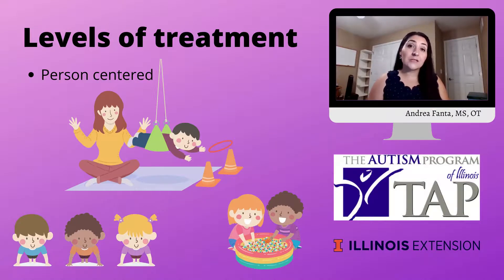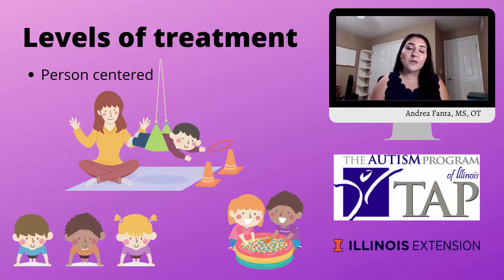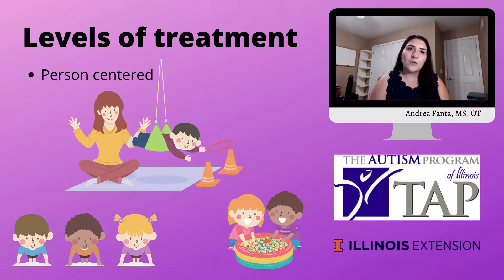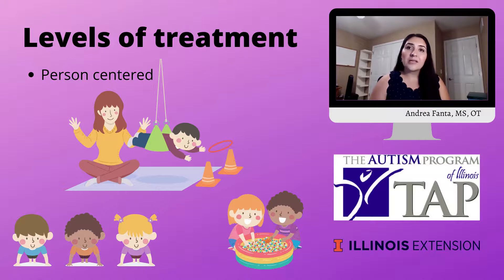Understanding and addressing SPD is important and we can do it in three different levels. Usually when the approach involves all three at the same time is when we see better results, having a child who is more comfortable with the sensory information received and also with their own sensory needs. When the treatment is person-centered, there's usually sensory-based intervention in a sensory gym, or it can also be a cognitive approach where the child is engaged in activities that reinforce the sensory information we want to work on.